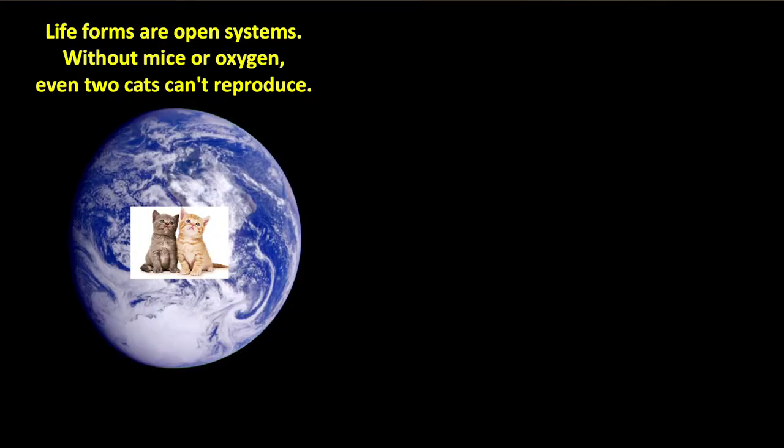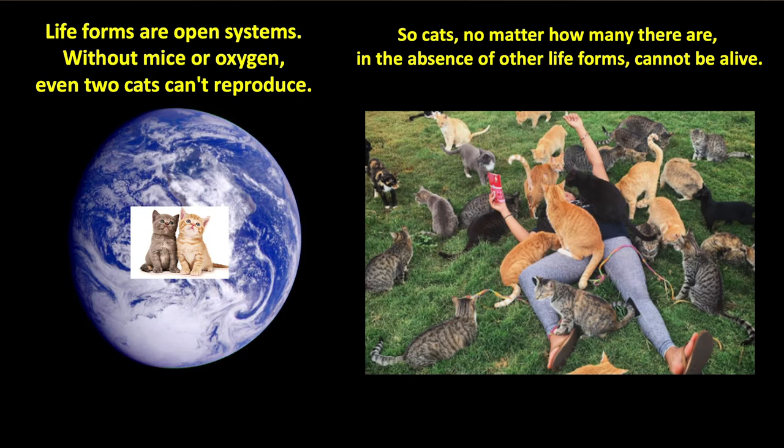Life forms are open systems. Without mice or oxygen, even two cats can't reproduce. Cats, no matter how many there are, in the absence of other life forms cannot be alive because they have to eat other life forms. Without them, they cannot be alive, and therefore they can't reproduce by themselves.